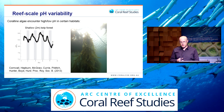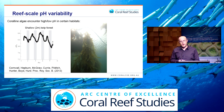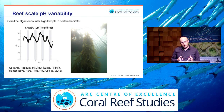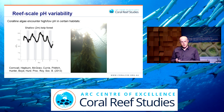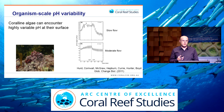During the day, pH in the seawater increases due to the drawdown of CO2 by the resident macroalgae, and at night pH then declines. This decline is due either to the respiration of the same macroalgae or to the mixing of unaltered seawater back into the habitat. Some coralline algae live in areas with high variability in pH, and even those that don't can encounter high variability in pH at their surface.